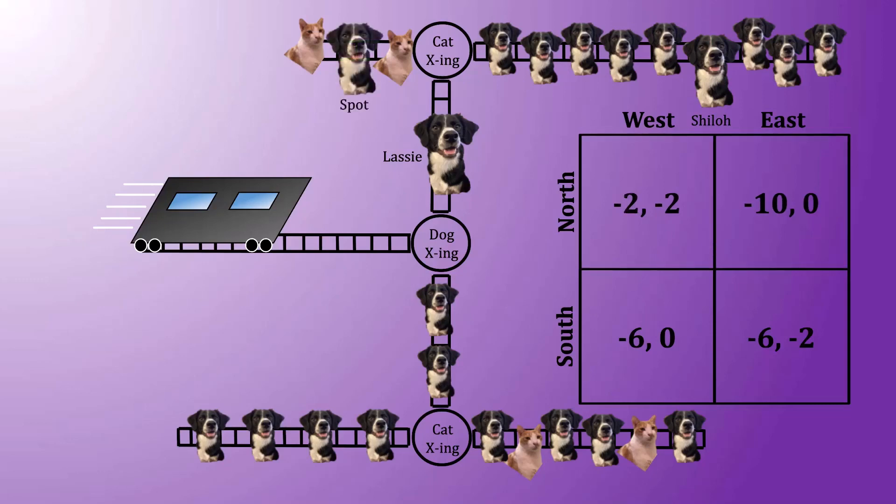If we put back Spot, but remove Shiloh, same story, just a different corner. Now the payoff for north-east improves by one, but it's still the case that this is a guessing game, and it's still the case that the dog loses six regardless of what the cat does if the dog goes south.